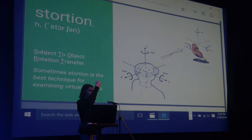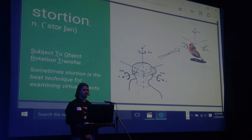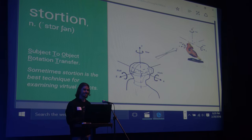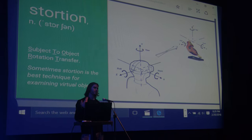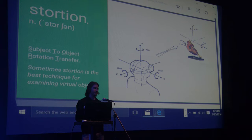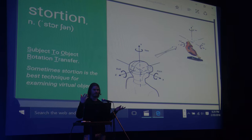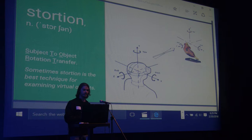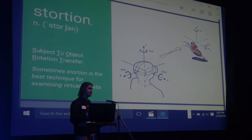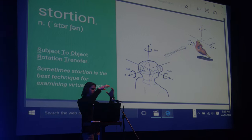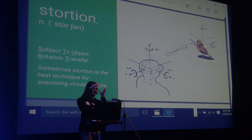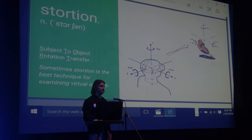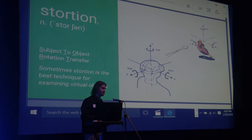Hence: SubjectToObjectRotationTransfer. This effect only really works in empty space — if there was a background, I really have no idea what would happen with it. If your application has a need for examining an object from any conceivable angle, this could be a surprisingly intuitive and effective means to do that.